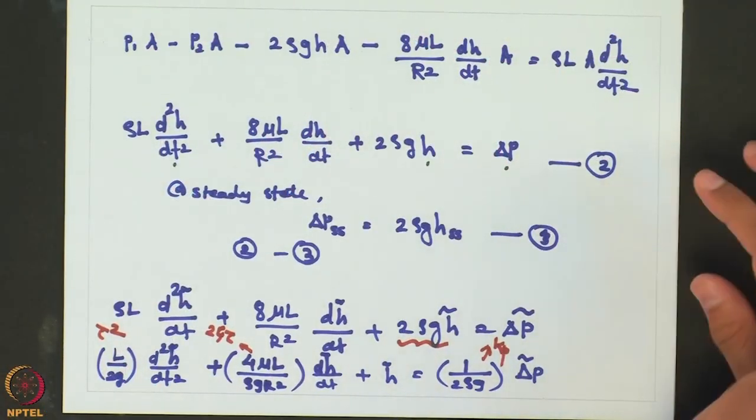So these are the three ways in which you can get a second order dynamical response in a chemical engineering system. Thank you.